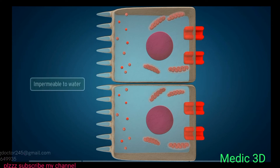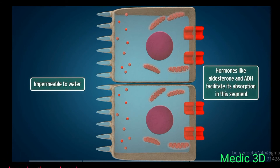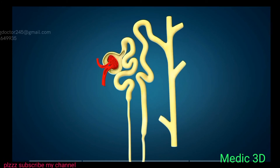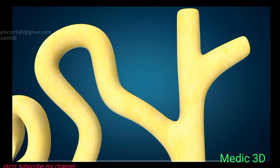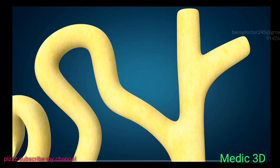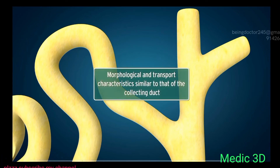Though the DCT is relatively impermeable to water, hormones like aldosterone and ADH facilitate water absorption in this segment. The DCT empties into the collecting duct through the connecting segment or tubule, which is a small and relatively straight tubule with morphological and transport characteristics similar to those of the collecting duct.